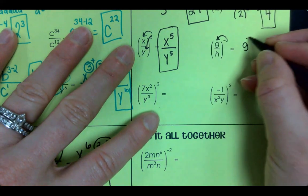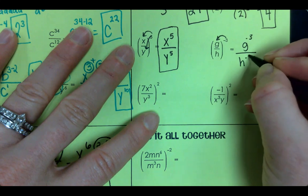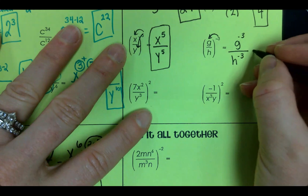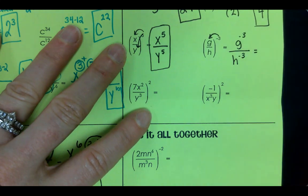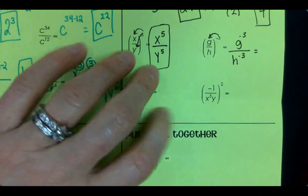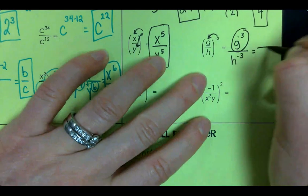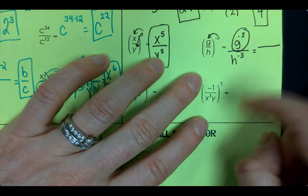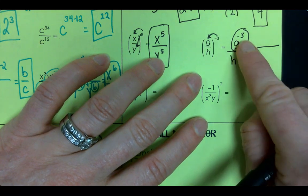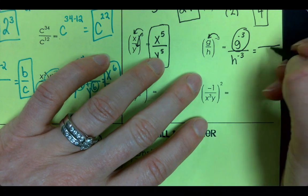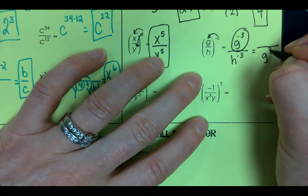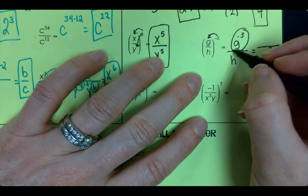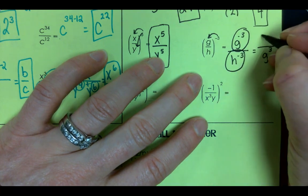The next one. We have a negative exponent. Alright, so if we have a negative exponent, we can't leave our answer like that. So we've got to move this. So if it's on top, it goes to bottom. If it's on bottom, it goes to top. So this is a negative exponent, g to the negative 3. So it's going to go down to be on the bottom, g to the 3. And then you can have a negative exponent still. So if it's on bottom, it goes to the top.